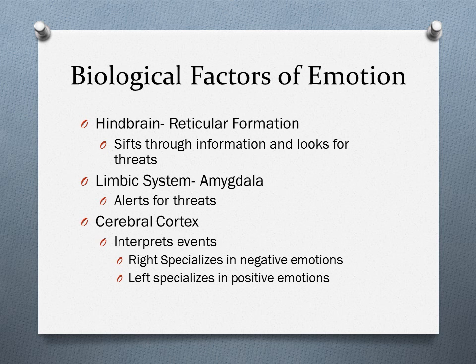There are different biological factors involved in emotion. The hindbrain's reticular formation sifts through information and looks for threats to keep you alive. The limbic system — specifically the amygdala — handles anger and arousal. The cerebral cortex helps interpret events. In the frontal lobe, the right hemisphere specializes in negative emotions and facial expressions, while the left hemisphere specializes in positive emotions.